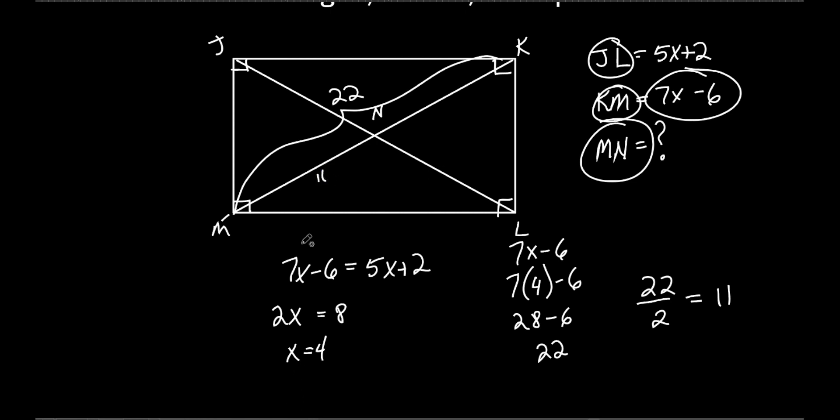How do you know it's half of it? Because the diagonals bisect each other on any parallelogram. And is a rectangle a parallelogram? It is. It's just a special type of parallelogram. It's a parallelogram with four right angles in it.